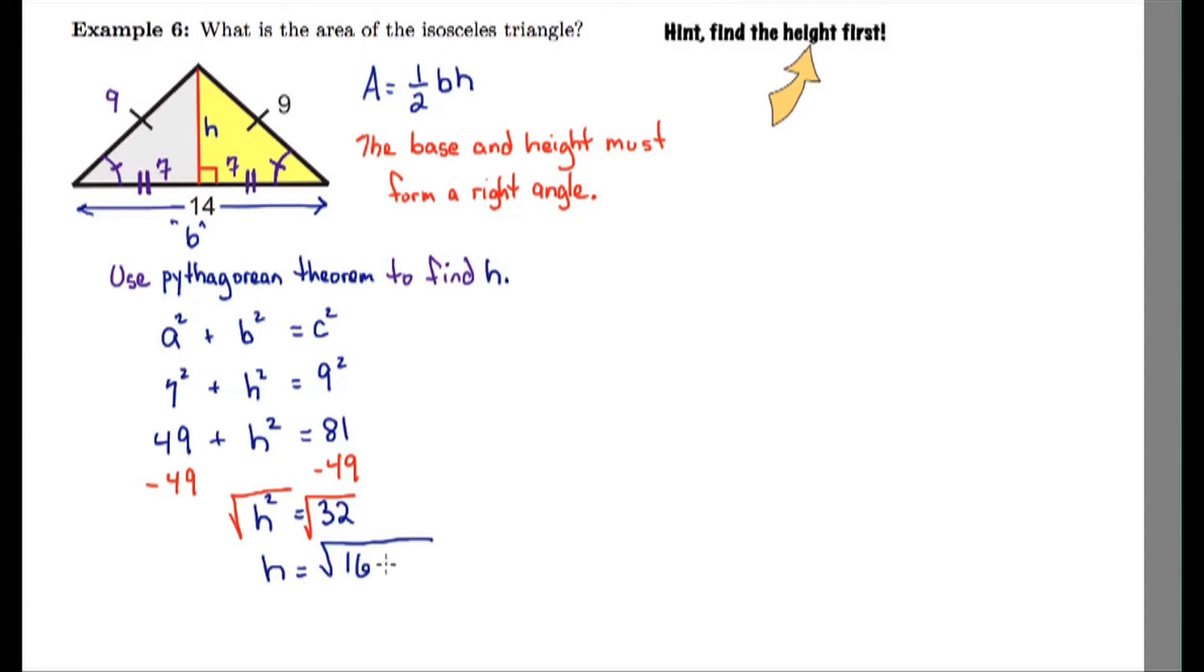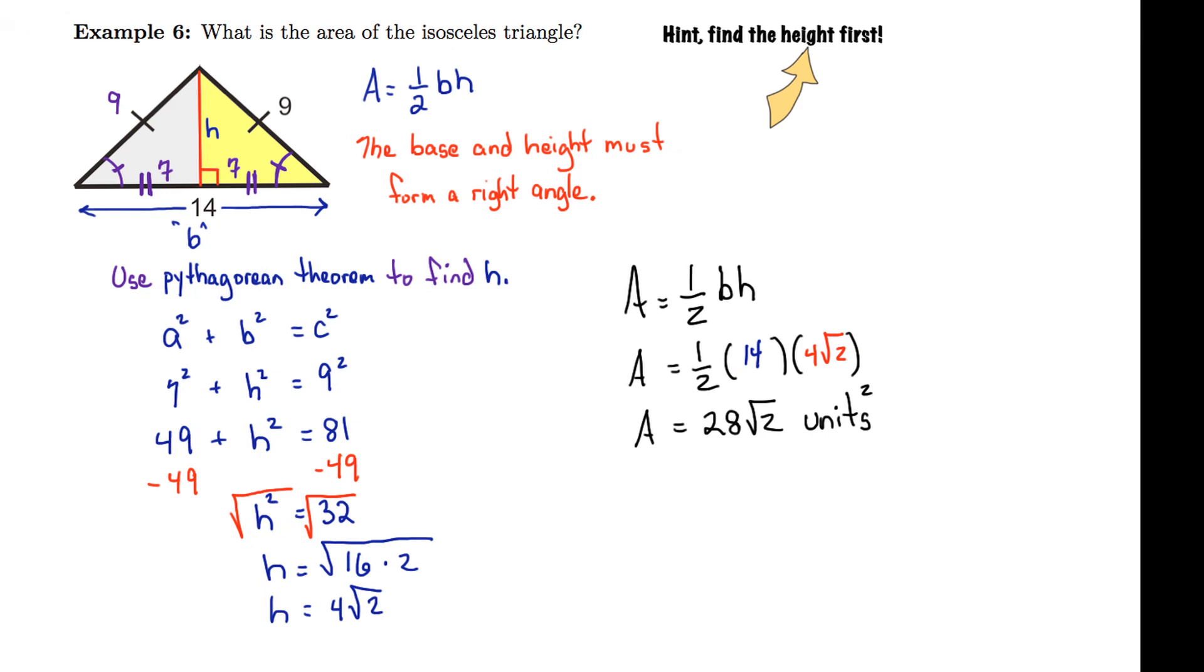So I get h squared equals 32, and I take the square root of that to get h by itself. 32 simplifies to 16 times 2, and the square root of 16 is 4. So 4 root 2 is my height and my base is 14. I could substitute these into the equation, multiply them together, and I'll leave it in radical form. So one half of 14 would be 7. 7 times 4 is 28 root 2 units squared. And that's how we find the area of an isosceles triangle using the Pythagorean theorem. So there's so many applications for the Pythagorean theorem, and I hope these examples make sense. See you next time.